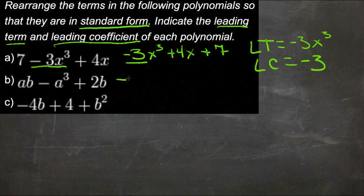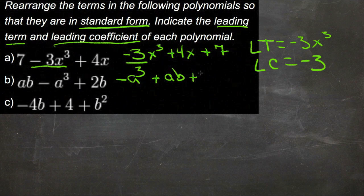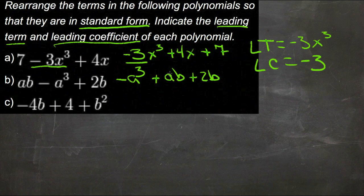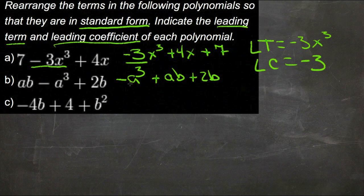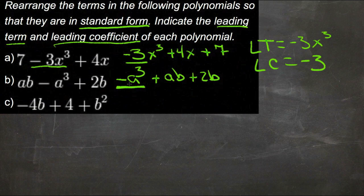For example b, we have negative a cubed, then plus positive ab, and then positive 2b. So we have a to the third, a to the first, and a to the zero. Our leading term is negative a to the third, and our leading coefficient is negative 1, because we have a sort of hidden 1 there.